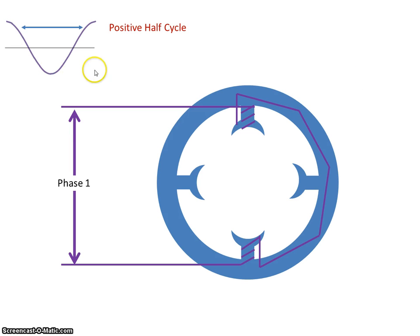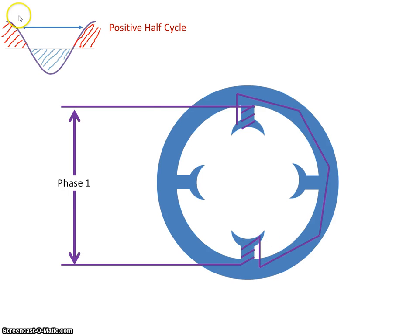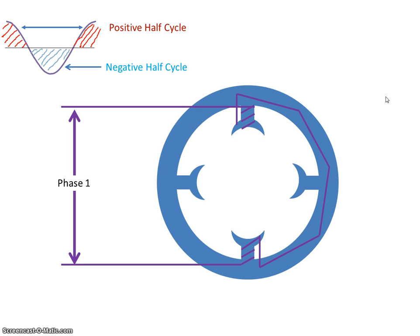During the positive half cycles — this area here — the current is going to flow around these windings. So on the positive half cycle, using the right-hand rule, we get a north pole there and a south pole there, so the flux lines will be in that direction. Therefore on the negative half cycle the current will be flowing in the opposite direction, so the north pole will now be down here and the south pole will be there, and the flux lines will be in that direction.